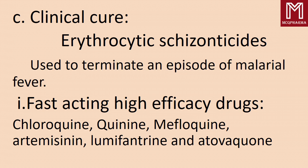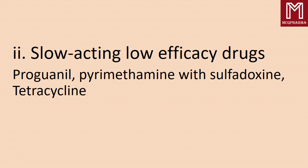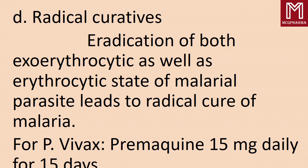Next, clinical cure — erythrocytic schizonticides used to terminate an episode of malarial fever. Fast-acting high-efficacy drugs: chloroquine, quinine, mefloquine, artemisinin, lumefantrine, and atovaquone. Slow-acting low-efficacy drugs: proguanil, pyrimethamine with sulfadoxine, tetracycline. Next, radical cure — eradication of both exo-erythrocytic as well as erythrocytic states of the malarial parasite leads to radical cure of malaria. Example: for Plasmodium vivax, primaquine 50 mg daily for 15 days. These are the classifications of antimalarial drugs.